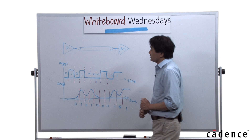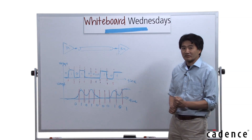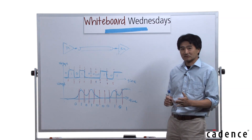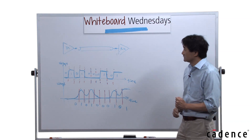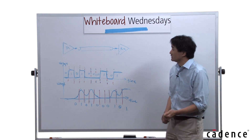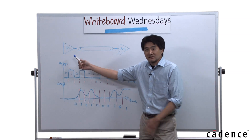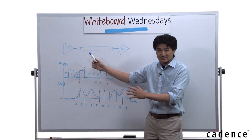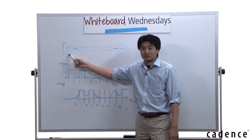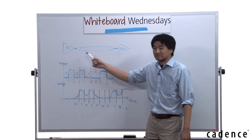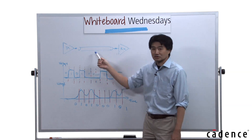Before we talk about the eye diagram, we need to talk about how it is generated. Here is a picture of a typical, very simplistic communication system where you have a transmitter, a receiver, and a channel.